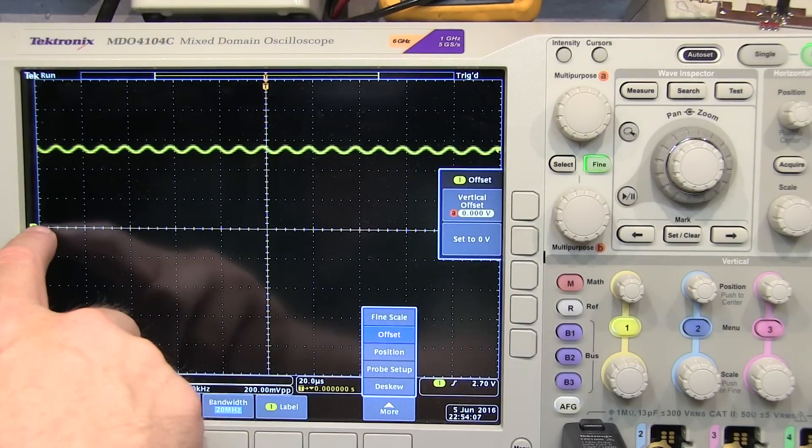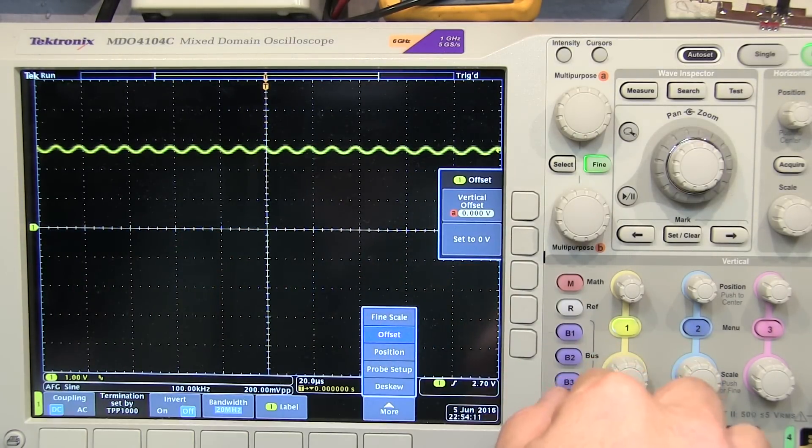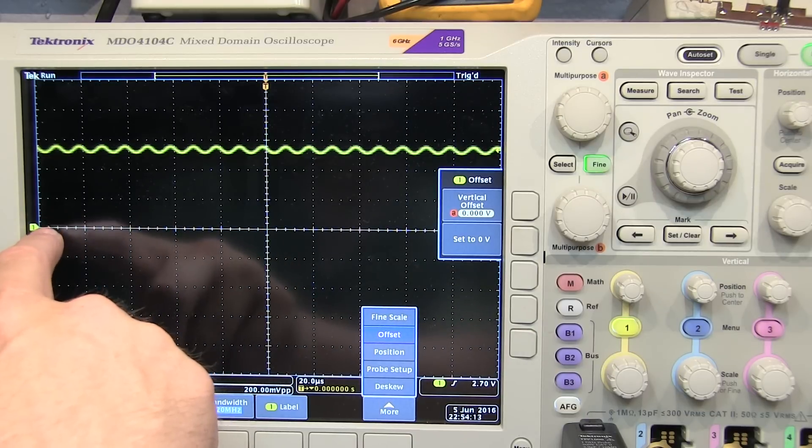With the offset set to 0 volts, that means that the reference point is at 0, and when I adjust my scale, it's adjusting around that point, that point staying in the same spot on the scope screen.